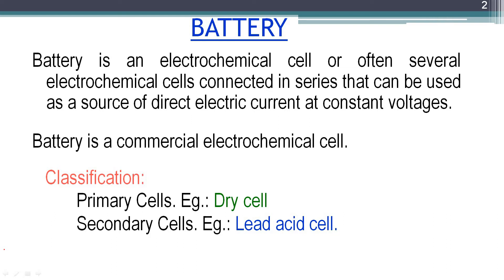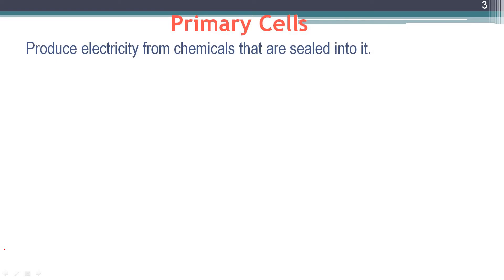Based on their recharging capacity, batteries are classified into two types: primary batteries (or primary cells) and secondary batteries (or secondary cells). An example of a primary cell is the dry cell, and an example of a secondary cell is the lead acid cell. Primary cells are non-rechargeable and can be discarded after use, whereas secondary cells are rechargeable.